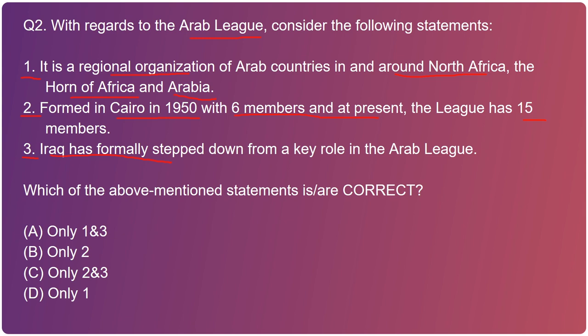The right option is option D - only the first statement is correct. The second statement is incorrect because the Arab League was formed in Cairo in 1945, not 1950, and at present the league has 22 members, not 15.